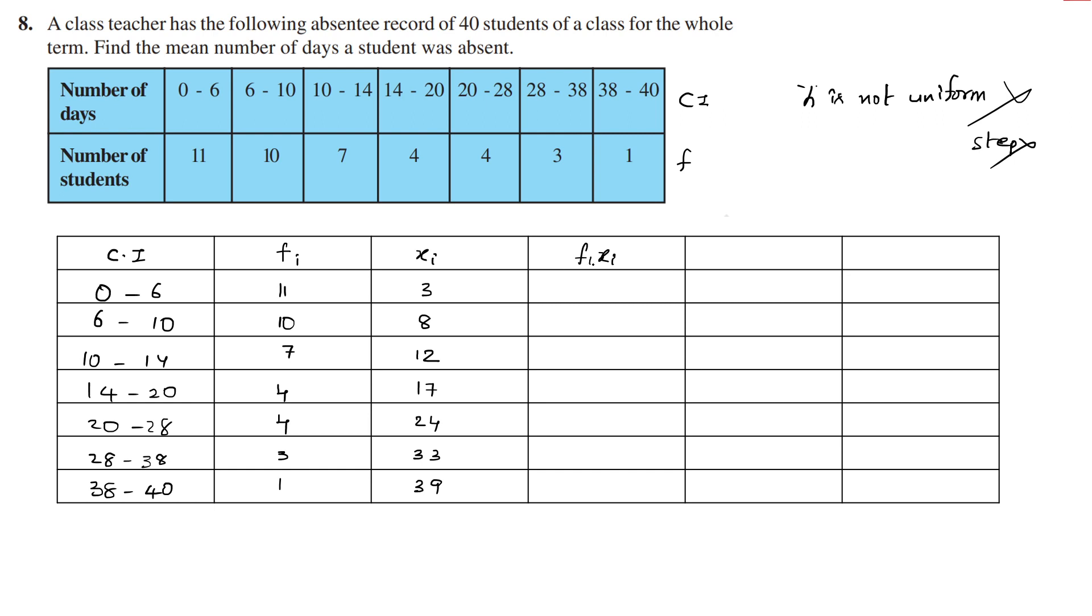Now we have to find fi times xi. In the direct mean method, x bar is equal to sigma fi xi divided by sigma fi. This is the direct mean method formula.